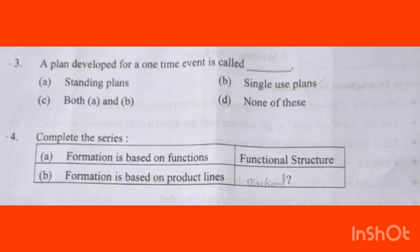Complete the series. Formation based on function is called Functional Structure — that is Option B. Formation based on product line — how many product lines determines that structure. The name of that structure is Divisional Structure. Divisional structure means the organization is structured based on product lines. Option B for functional, divisional structure for product line.